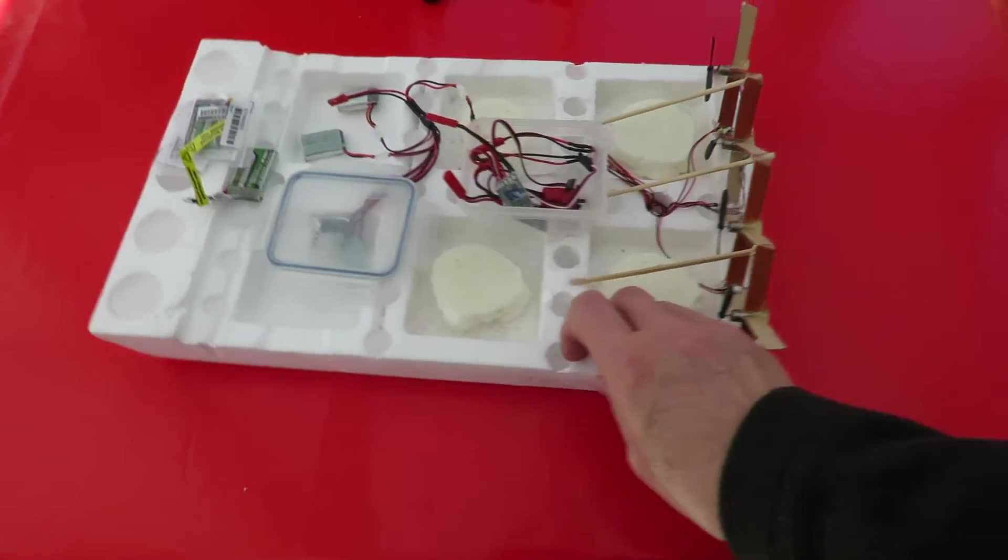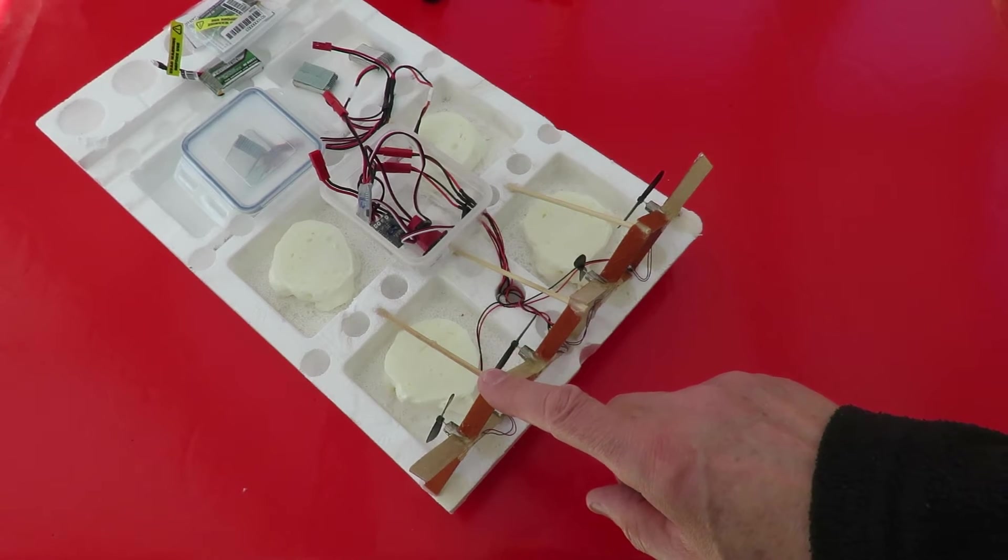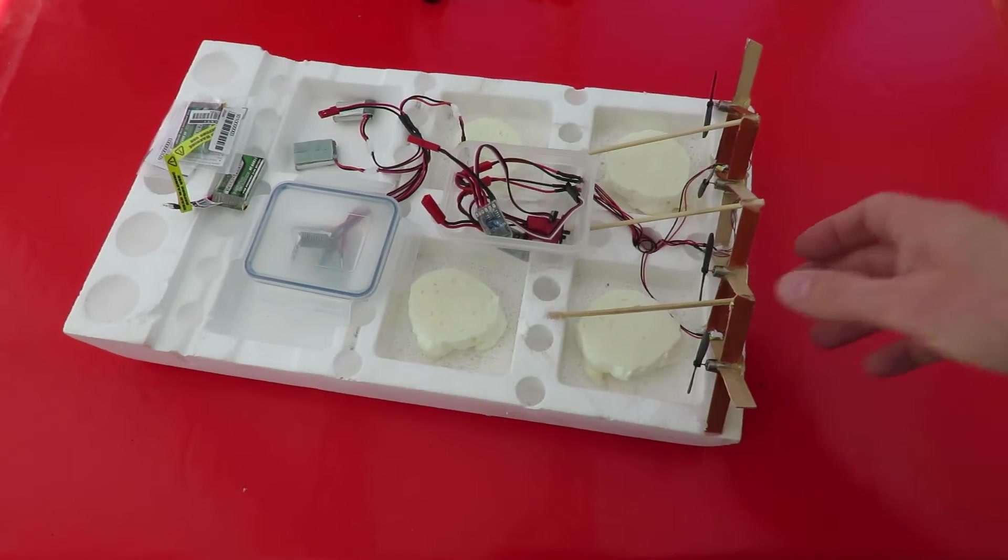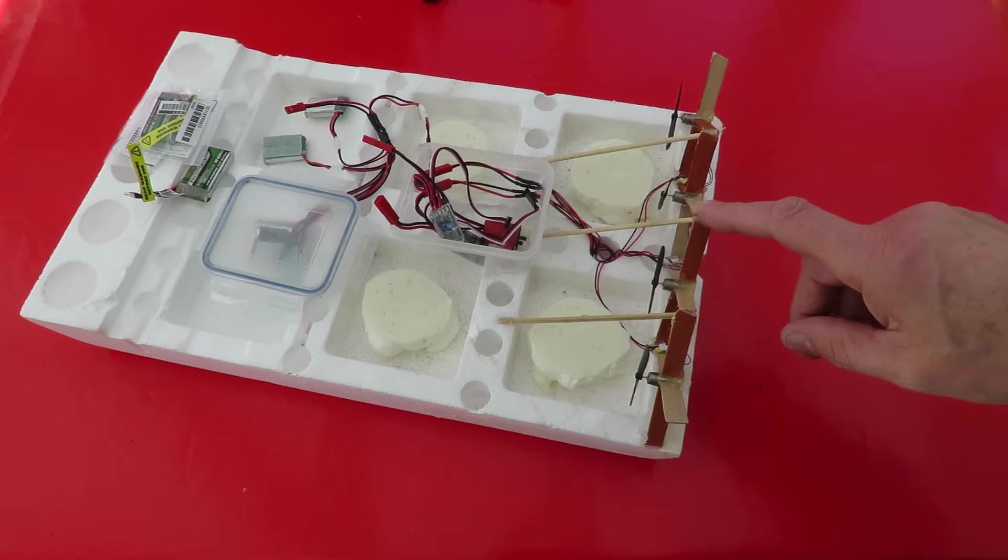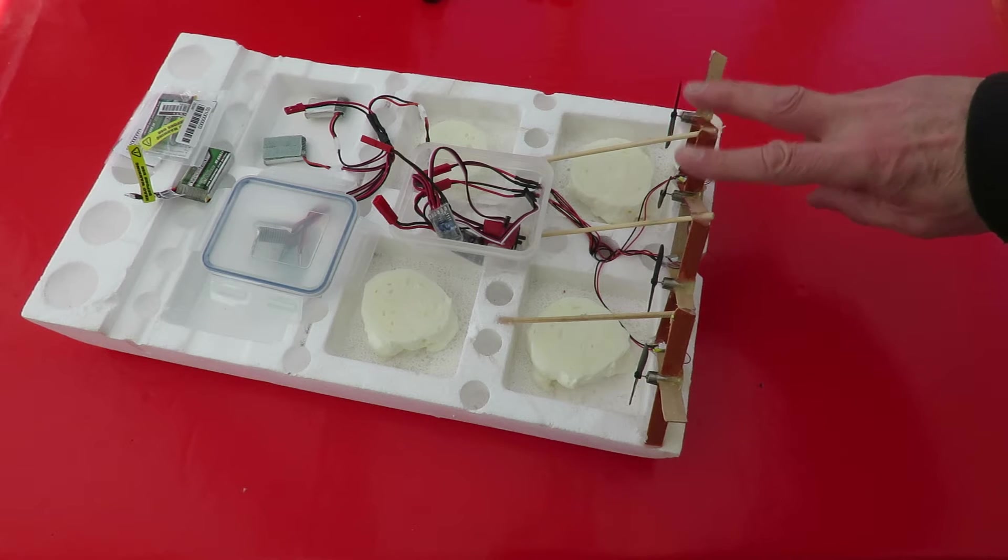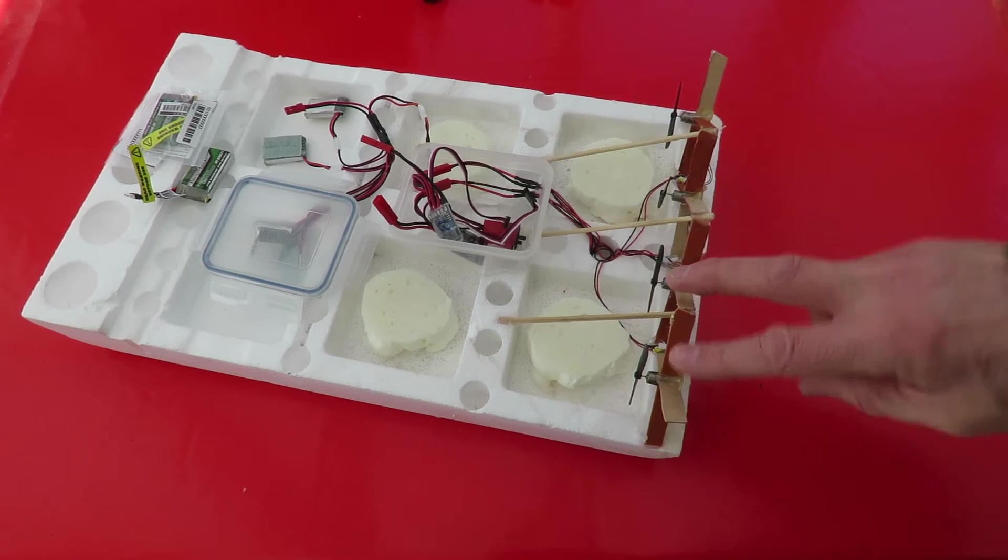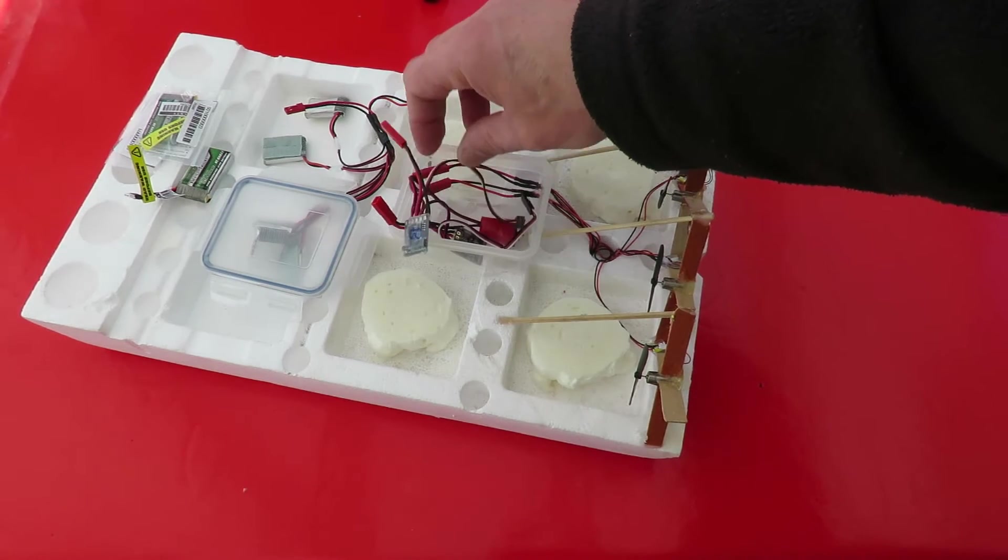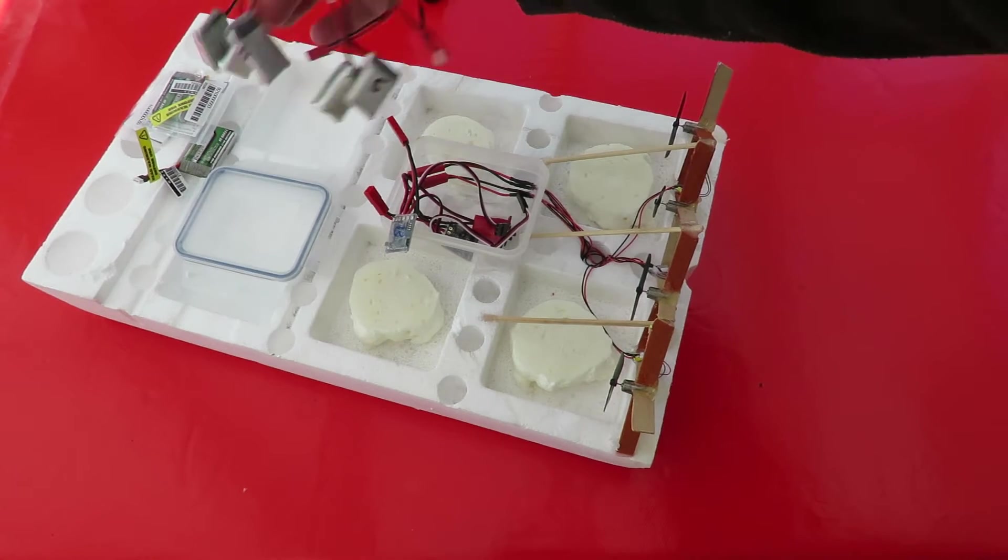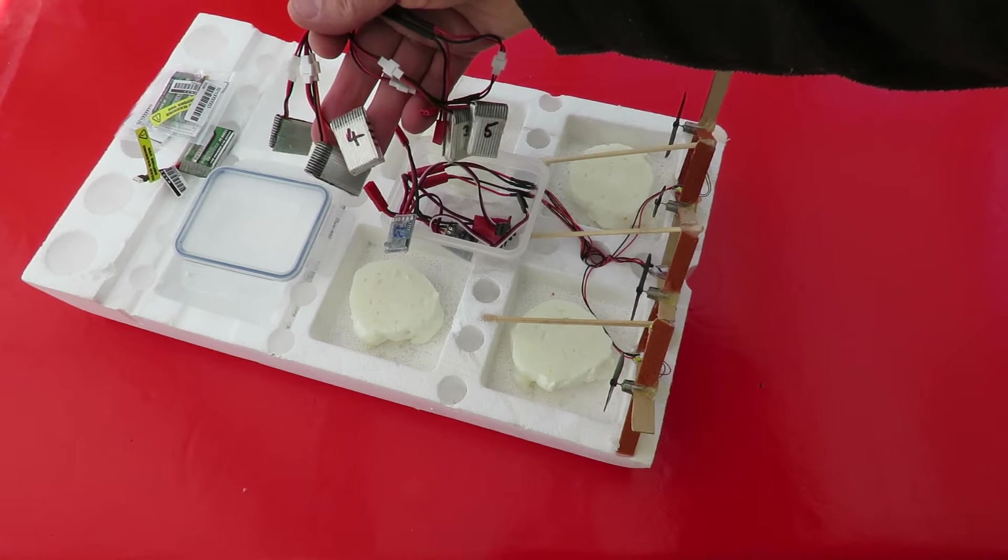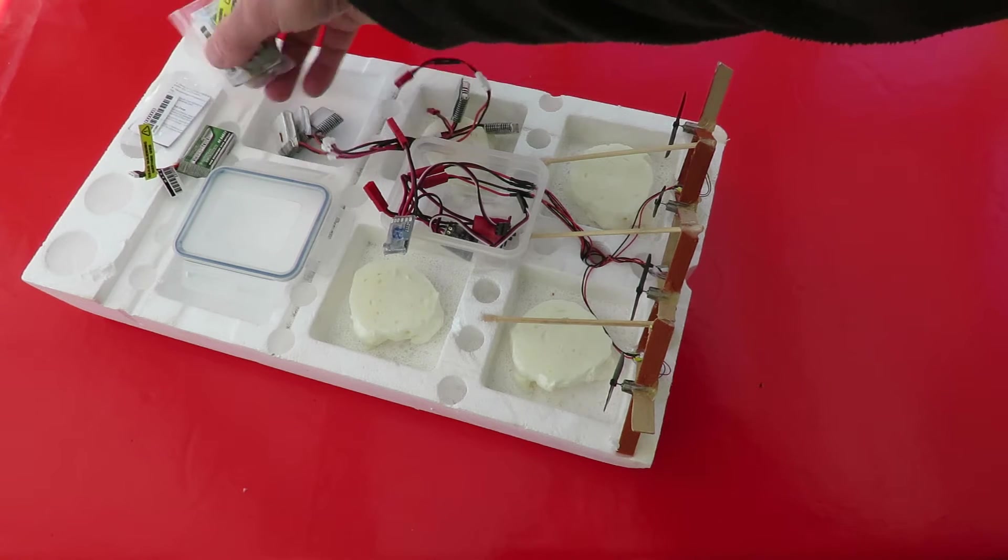It's got four 3.7 volt motors on the back, just little ones, and I run it using variable thrust. So we control those two motors from one ESC and those two motors from the other ESC. So I've got two ESCs and I've been running them on these little 1S LiPos.